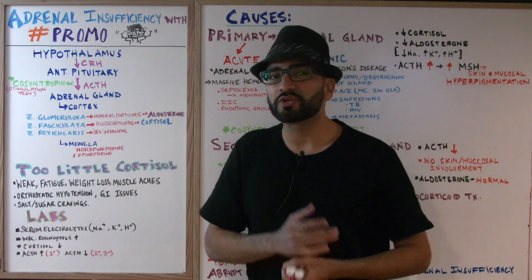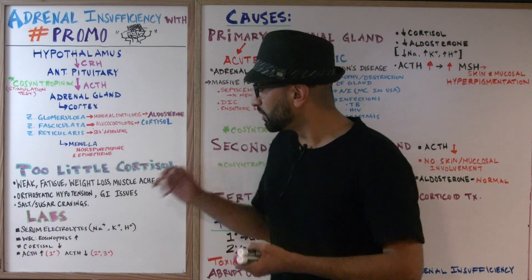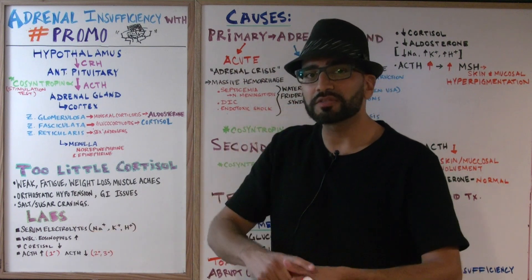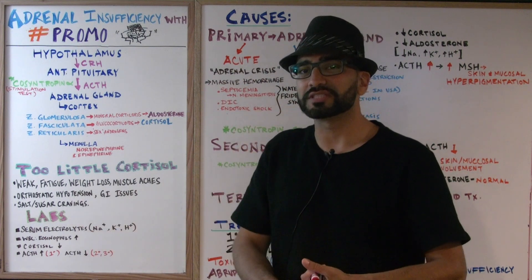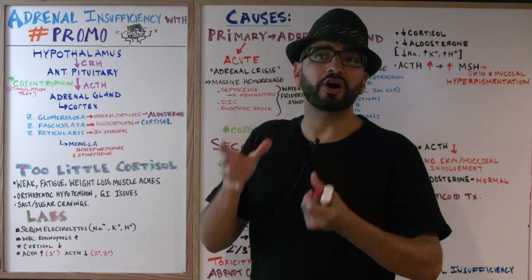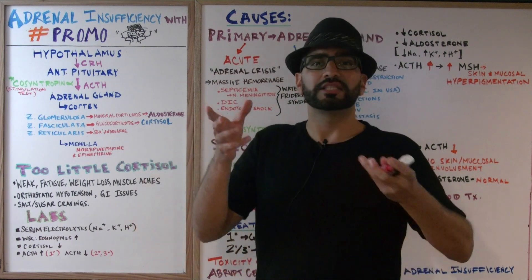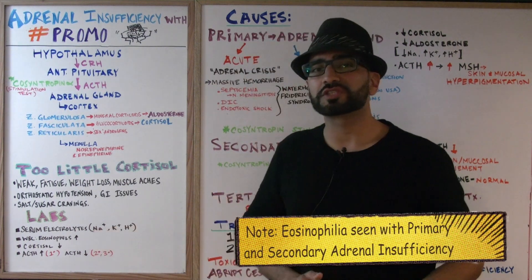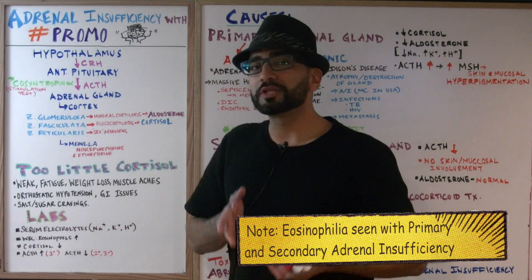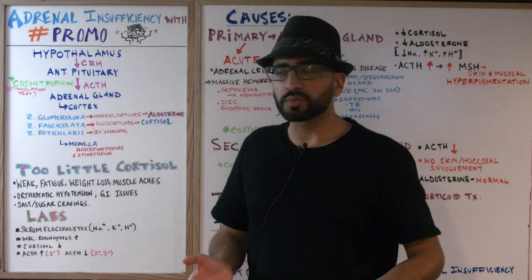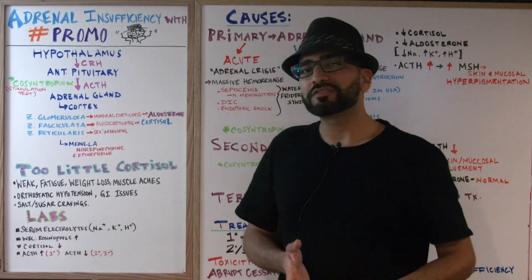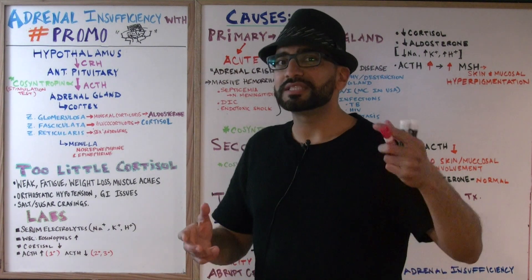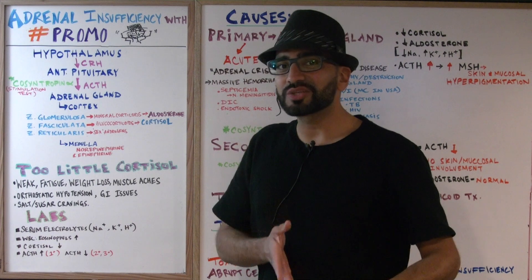Labs are very important. You have to check the serum electrolytes — measure sodium, potassium, and hydrogen levels. This is a big clue that tells you whether the cause is primary, secondary, or tertiary. Eosinophils are going to be increased, and cortisol levels will be low in all three situations. You also need to measure ACTH levels: if ACTH is increased, it indicates a primary cause; if decreased, it's either secondary or tertiary.